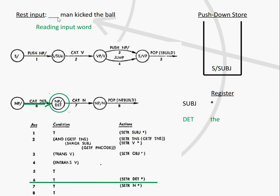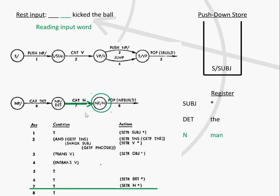Now we are consuming the first input word, which was 'the'. This transition can always be taken, and it says we are storing the determiner with the respective value in the register. That can only be performed because the automaton looks into its lexicon and sees that 'the' is of type determiner. Then we take the next transition and consume the next input word, which is 'men'. The automaton looks into its dictionary and sees that 'men' is a noun, and the action stores the noun with that value in the register.